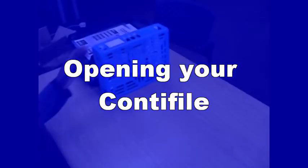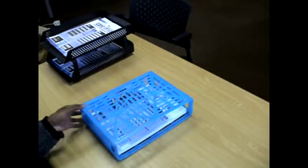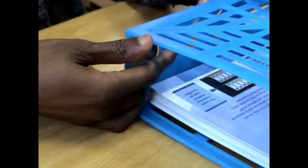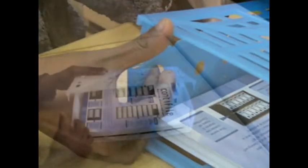To open your Conti file, retrieve it and lay it flat. Unclip the holding clips by pushing in and up at the top and the bottom of the open end of the file.